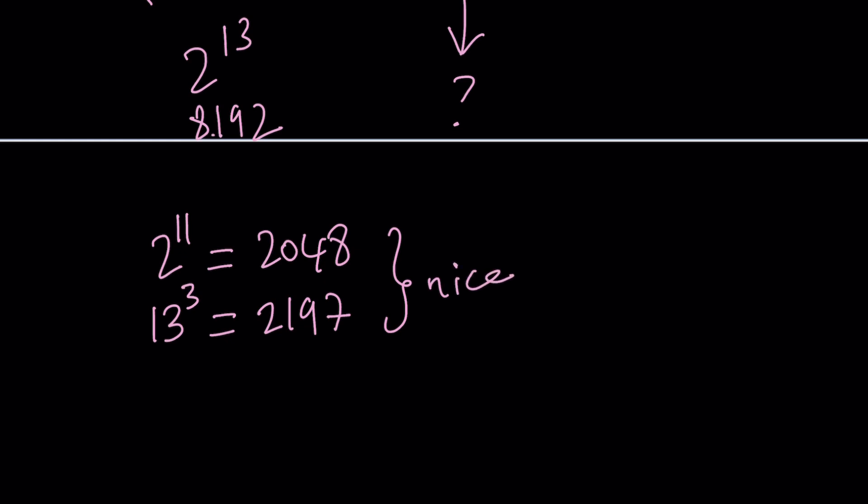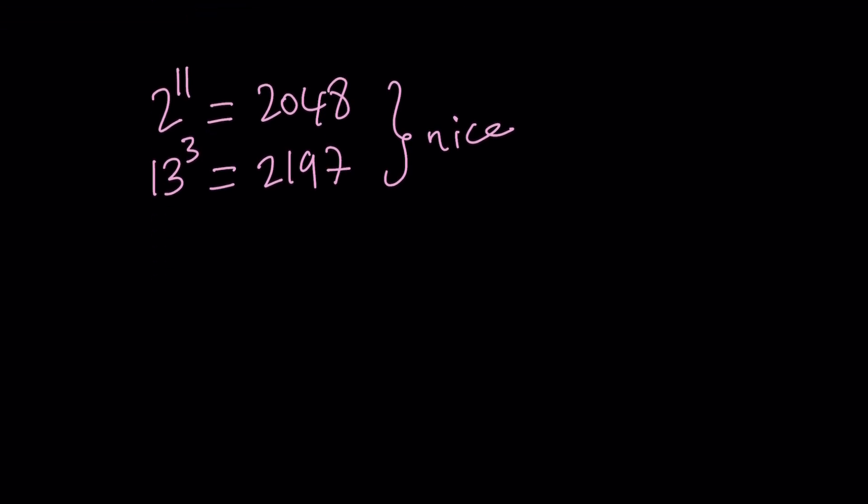We got a nice comparison. So, in other words, from here, we can safely say that even though we're looking for the large number, I usually write the small number first on the left hand side. I don't know. It's just a habit. So, 2 to the 11th power is less than 13 cubed. So far, so good.